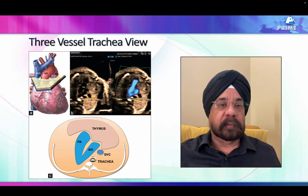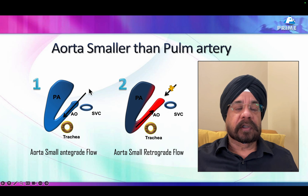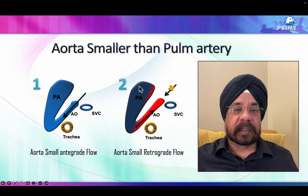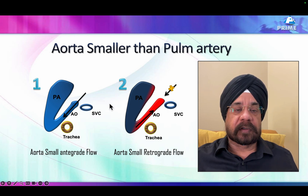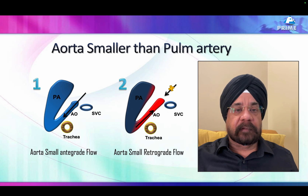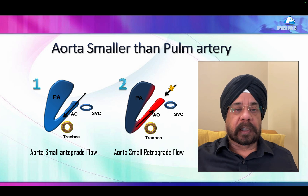Whether the aorta is right-sided, left-sided, or a double arch — many things can be picked up on this view. We believe that if you do a four-chamber view and a three-vessel trachea view, over 90% of diagnoses can be made. For example, if the aorta is smaller with antegrade flow, this is aortic stenosis. But if there is reversal of flow in the aorta, this indicates obstruction or aortic atresia — that is why flow is coming in the reverse direction. There are many advantages of the three-vessel view.